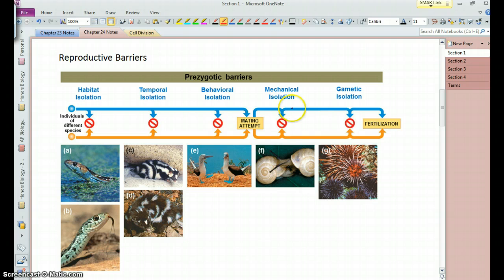and so this essentially precludes even attempting to mate. Now, you can get attempts at mating, but it could be that the parts don't quite fit together so well, and so even though they may attempt to mate, it's not successful. You can get successful mating, but the gametes might be incompatible, so fertilization doesn't occur.